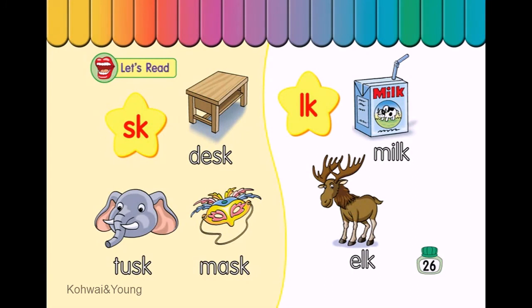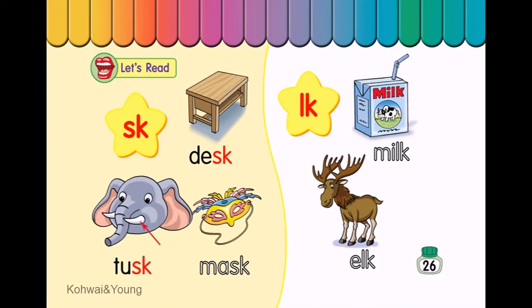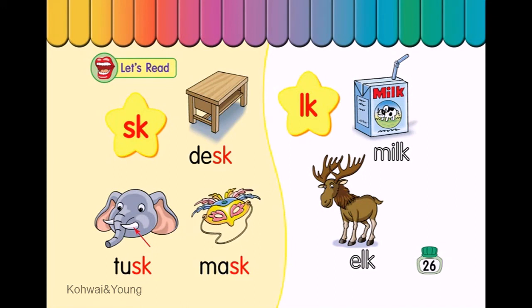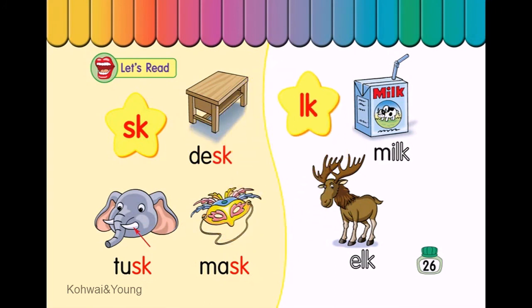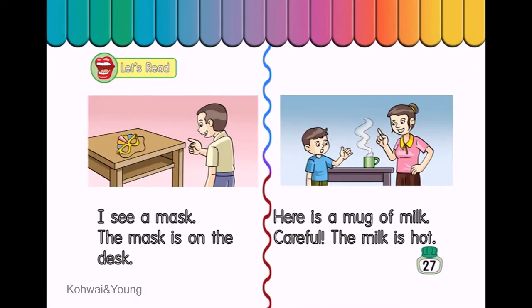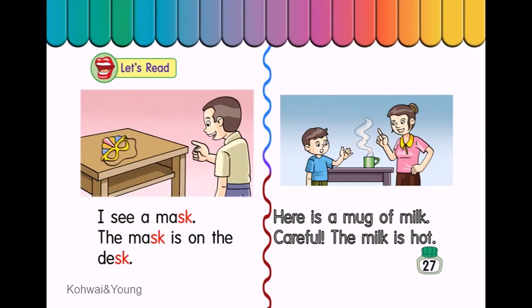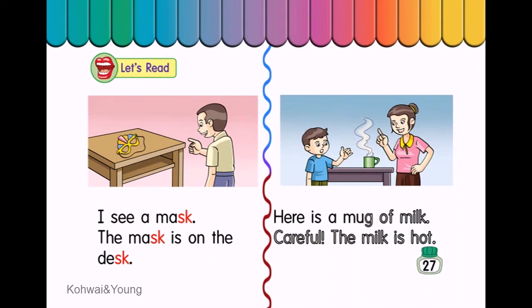Let's read. Ask. Desk. Tusk. Mask. Milk. Let's read. I see a mask. The mask is on the desk. Here is a mug of milk. Careful! The milk is hot.